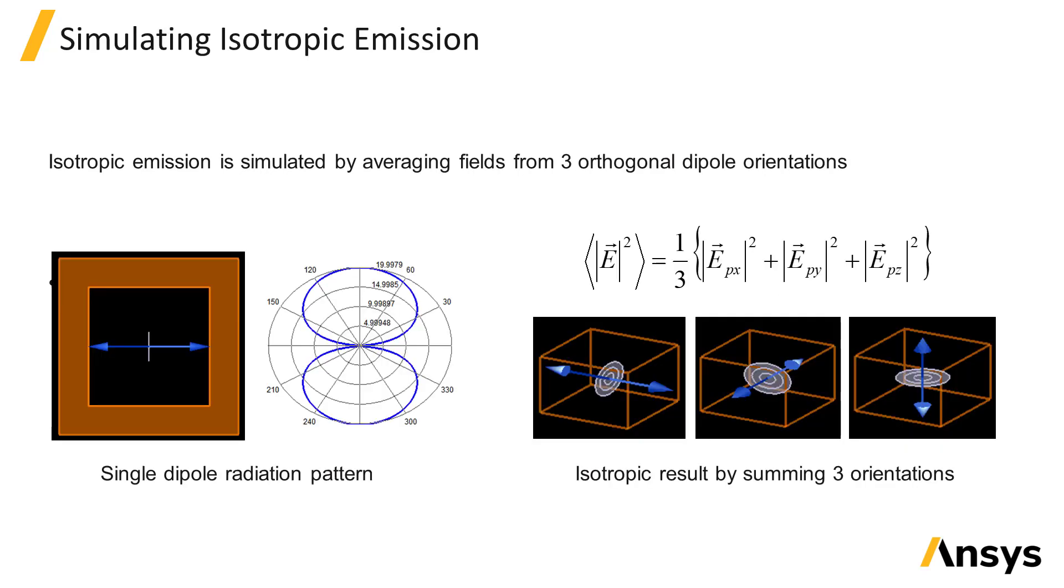A single dipole source will inject a dipole radiation pattern like shown in the image on the left. To simulate a point source which emits a uniform isotropic radiation pattern, you can run three simulations with orthogonal dipole orientations and then average the fields from the three simulations.